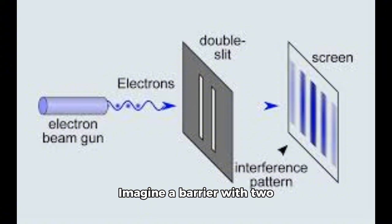Setup: Imagine a barrier with two narrow slits close to each other, and a screen placed behind the barrier to capture the particle's behavior. Particles, often electrons or photons, are fired one at a time toward the barrier with the two slits.